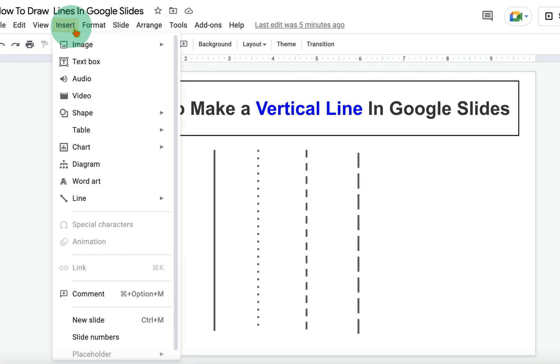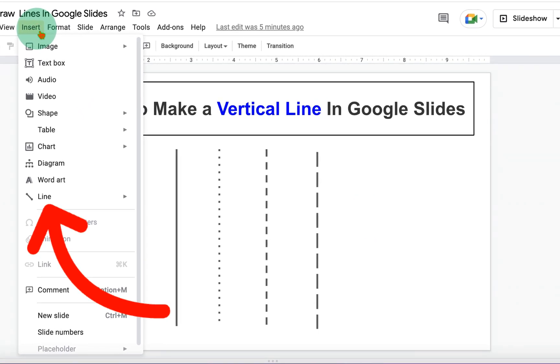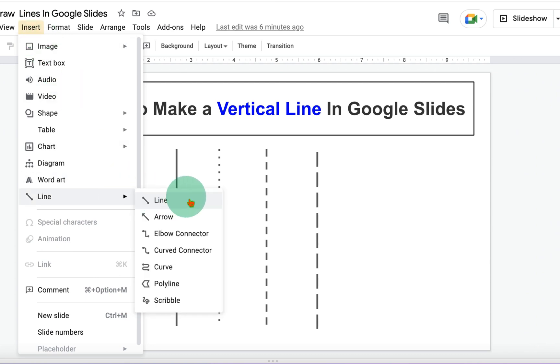First click on the Insert tab and then you will see here the option Line. Just select the first option line.